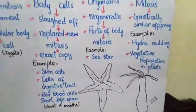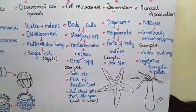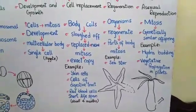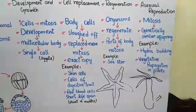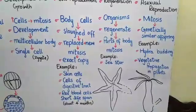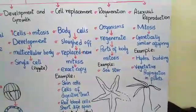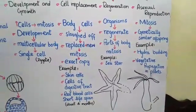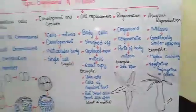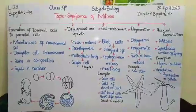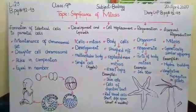Another type of asexual reproduction is vegetative propagation in plants. Plants also perform vegetative propagation and produce offspring asexually, involving only a single parent. There are many different ways of vegetative propagation, and we will explain how many types exist and how plants reproduce in this way. This is the overall view of the significance of mitosis.